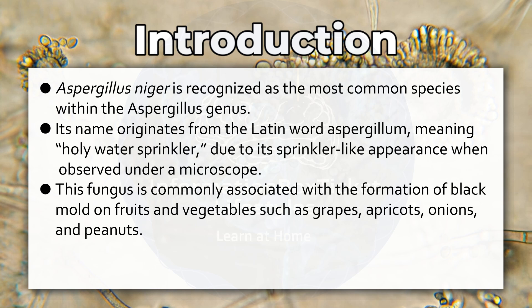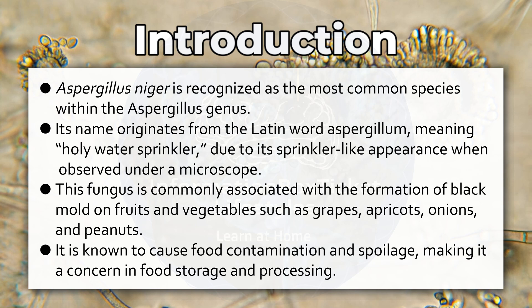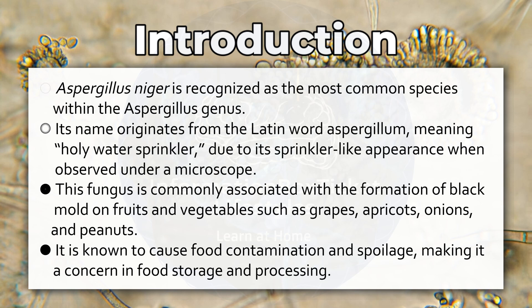It forms black mold on fruits and vegetables such as grapes, apricots, onions, and peanuts. It is known to cause food contamination and spoilage, making it a concern in food storage and processing.